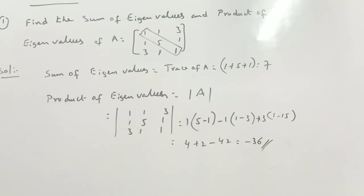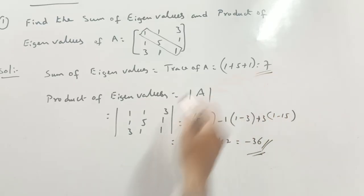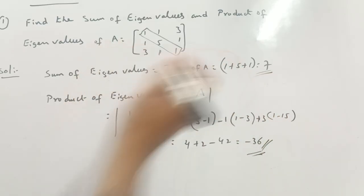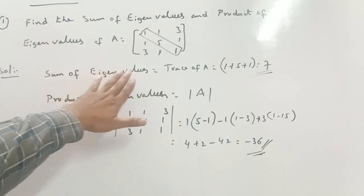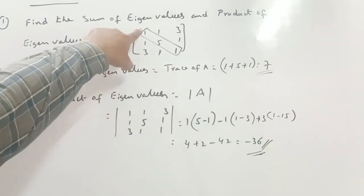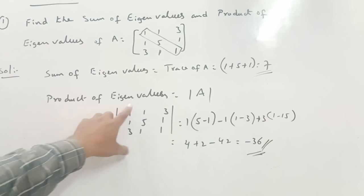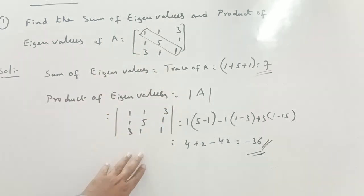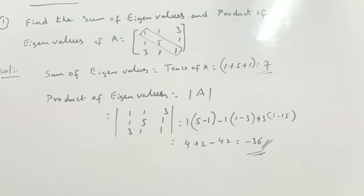Therefore, the product of eigenvalues is minus 36 and the sum of eigenvalues is 7. Whenever this problem comes as a short answer: sum of eigenvalues is the trace of A — add the diagonal elements; product of eigenvalues is the determinant of A.